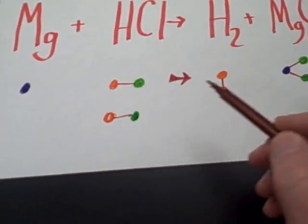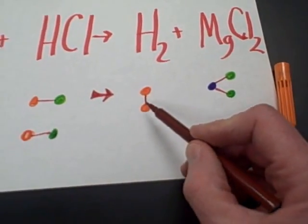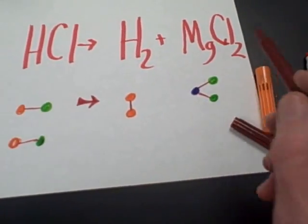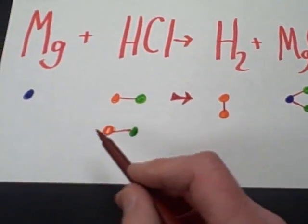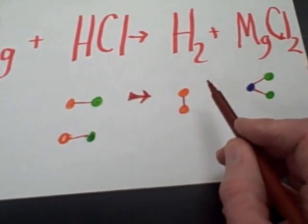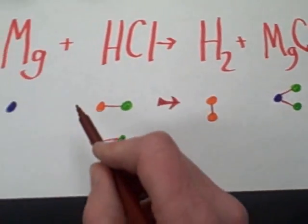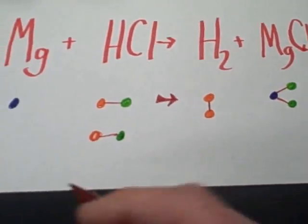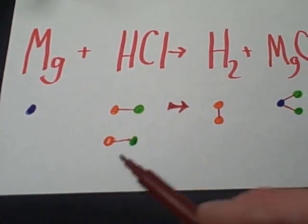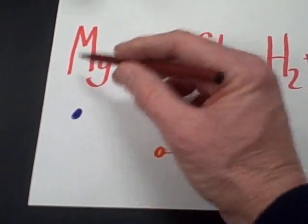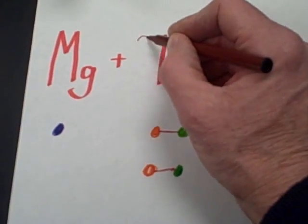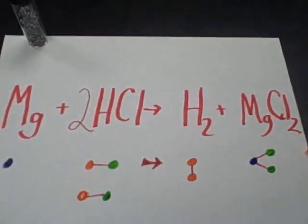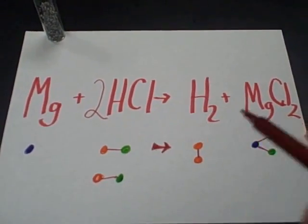Each of these is a molecule of hydrochloric acid, producing one molecule of hydrogen gas and one molecule of magnesium chloride, which is a salt. Now let's look at our numbers: 1 magnesium, 2 hydrogens, and 2 chlorines on each side. This is what we call a balanced chemical equation — one of these molecules combines with two of these to produce one of those and one of those. And that, ladies and gentlemen, is a balanced chemical equation.